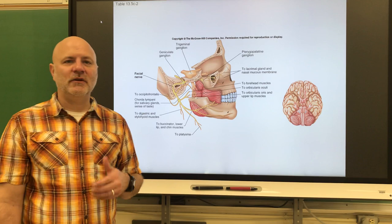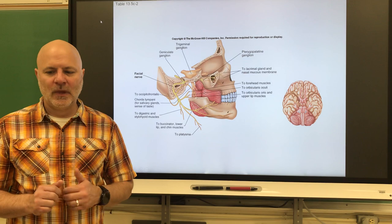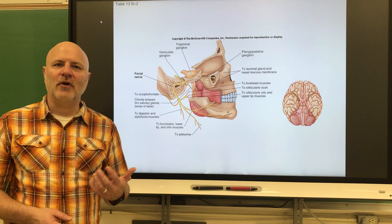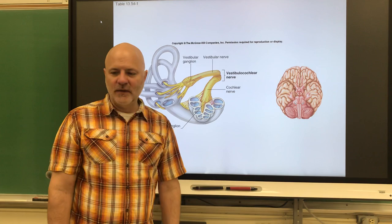Next is the facial nerve, which is a mixed nerve. It is sensory for taste on the back of the tongue, and it is motor for facial expressions — that's how it gets its name. It is also motor for our lacrimal glands and salivary glands.